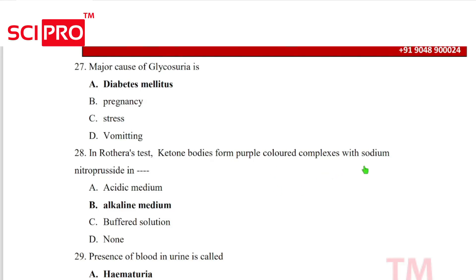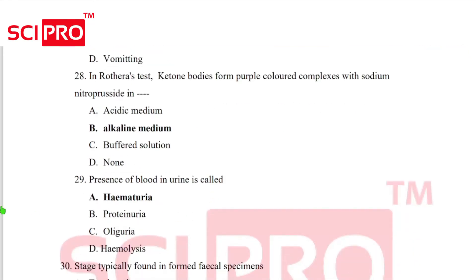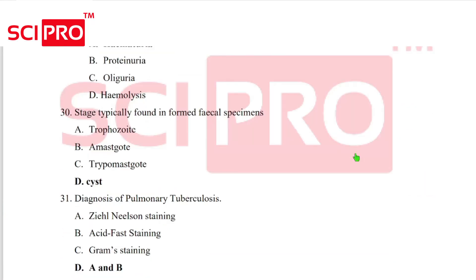Question number 28, in Rothera test, ketone bodies form purple colored complex with sodium nitroprusside in alkaline medium. Question number 29, presence of blood in urine is called hematuria. Question number 30, answer cyst.